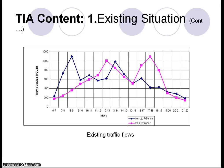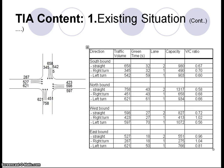We carry out a traffic survey — in this case a 16-hour count — to determine peak traffic demand. The worst demand is midday traffic between 12 and 2 o'clock, so we have to address this problem. We then analyze every intersection near the development based on the traffic volume data and the green time signal settings.